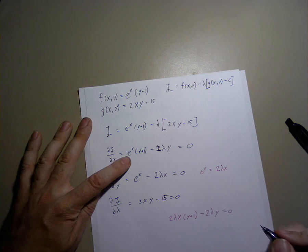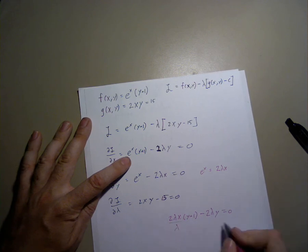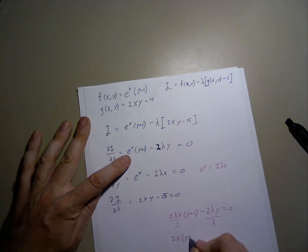In this case, we can get rid of the lambda, divide both sides by lambda, and we're left with 2xy plus 1 minus 2y equals 0.